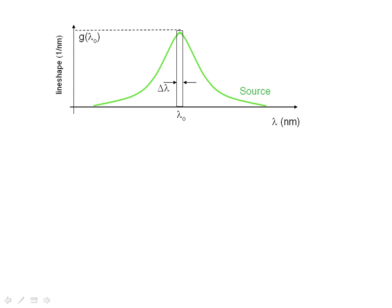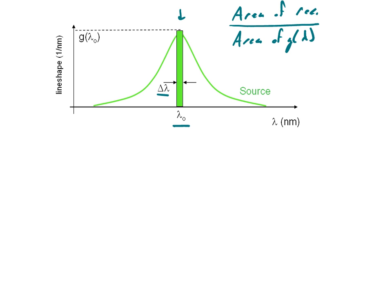Our source is shown again. The green line either represents the line shape — if the area under it is 1 — or the power put out by the source as a function of wavelength, where the area under it is the total power. Assuming it's the line shape, we want to know the power emitted over a certain wavelength range delta lambda at the peak, at position lambda-naught. This calculation is simply the area of the rectangle divided by the area of the line shape, which we know to be 1.